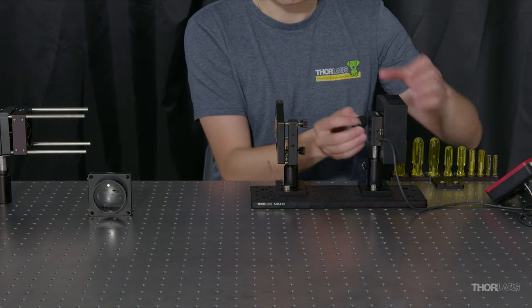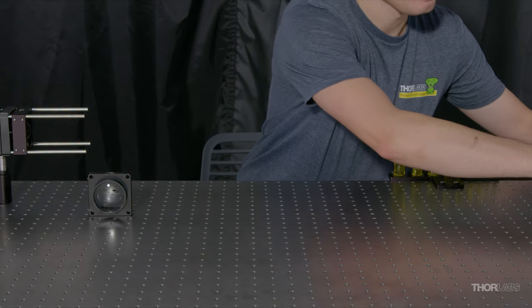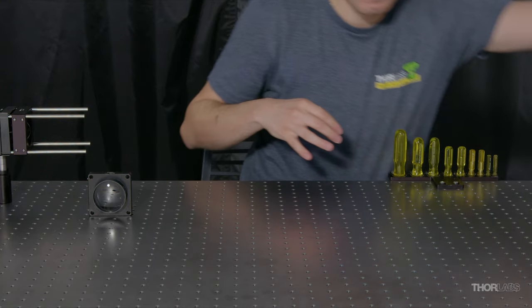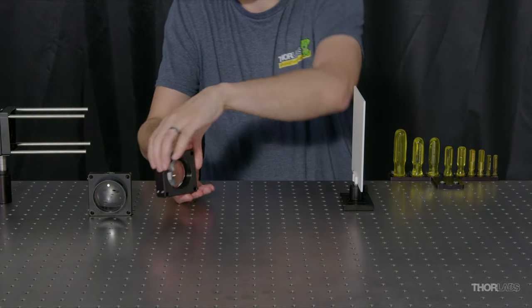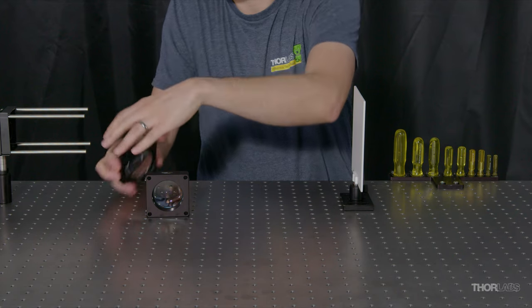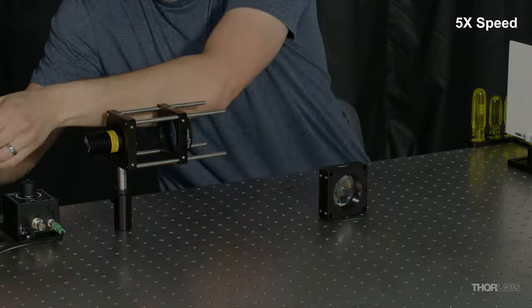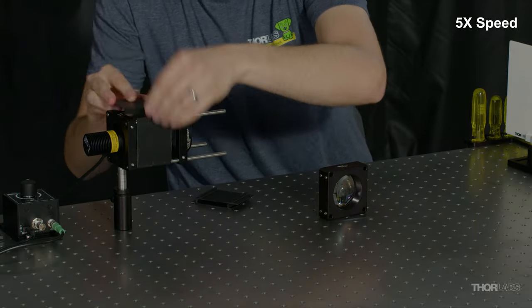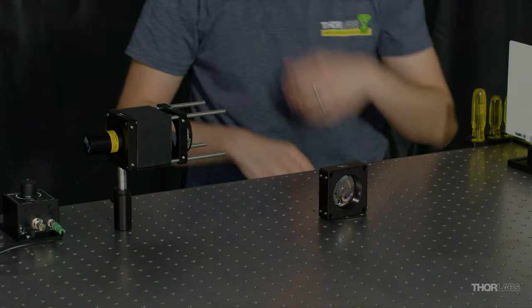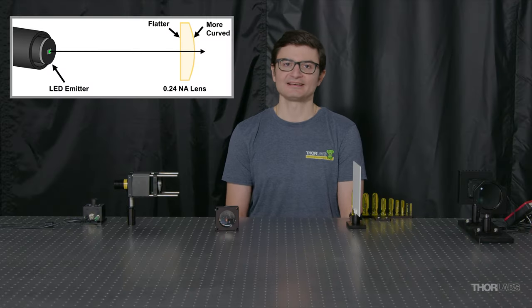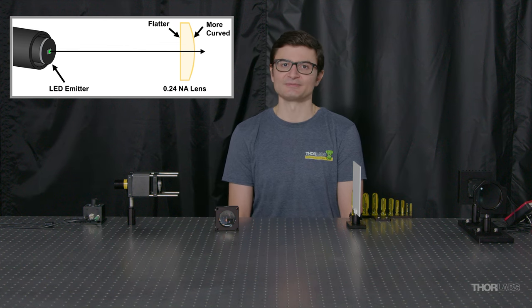I'll move the power sensor out of the way, bring the screen back into the beam path, remove the 0.76 NA lens from the system, and place the 0.24 NA 100 millimeter focal length aspheric lens in the cage system. I've once again placed the flat side of the lens towards the emitter. I'll optimize the collimation using the same technique as before.